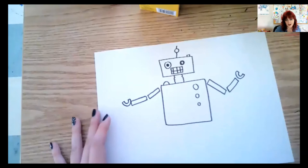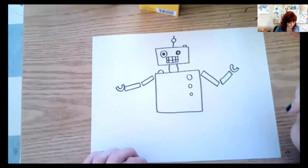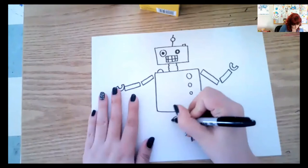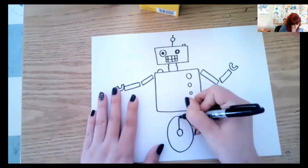Now you can give your robot legs or you can do what I'm thinking, which is to put him on a wheel, like a unicycle. I think that would be pretty cool. So I'm going to draw an oval, the middle, and then the spokes kind of like a bicycle wheel.